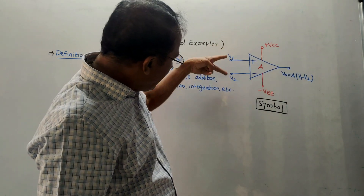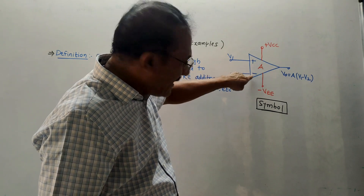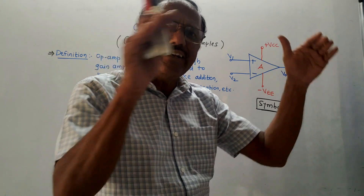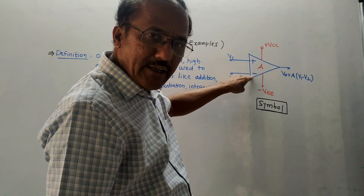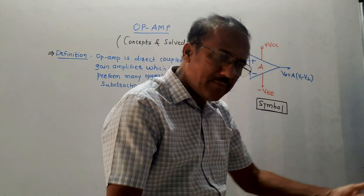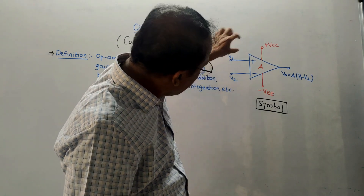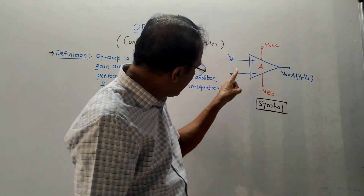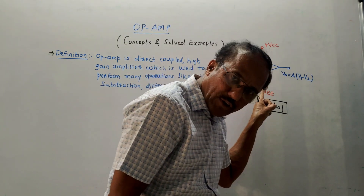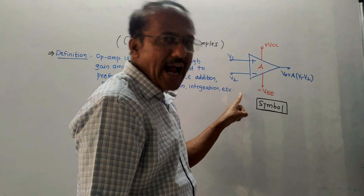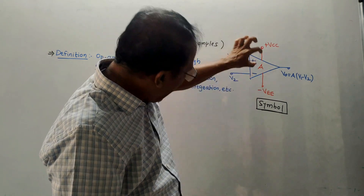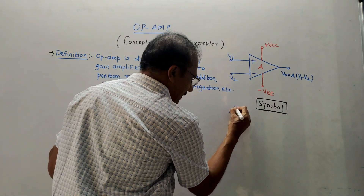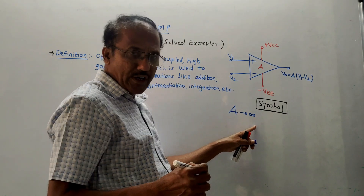In case of Op-Amp, there are two input terminals: positive terminal and negative terminal. The positive terminal is also known as non-inverting terminal, and the negative terminal is called the inverting terminal. V1 is the voltage connected to the positive terminal, that means V1 is the voltage of the non-inverting terminal. V2 is connected to the negative terminal, so V2 is the voltage at the inverting terminal. A represents the gain of Op-Amp, and ideally the gain tends to infinity.